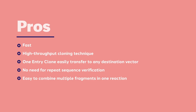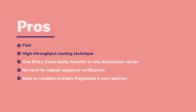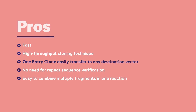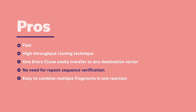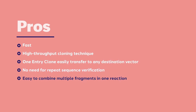Pros and cons of gateway cloning are summarized here. Gateway is fast — the BP and LR reactions are considered complete in five minutes. In addition, the entire system relies on only two enzyme mixtures, making the system very high throughput. One entry clone can easily be adapted by transferring to different destination vectors, with no need for repeat sequencing. Gateway also makes multiple fragment assembly easy.